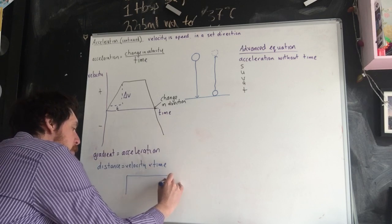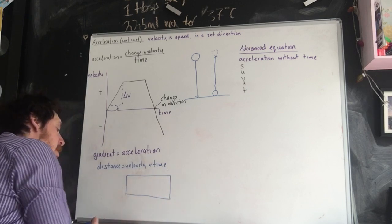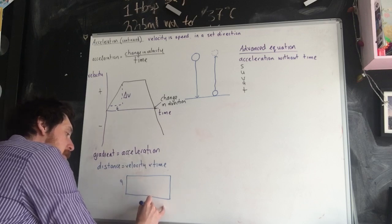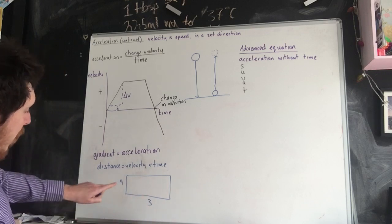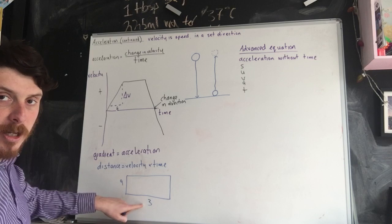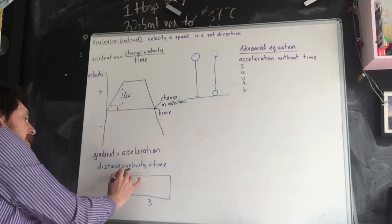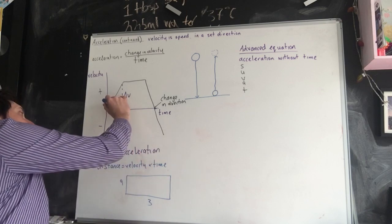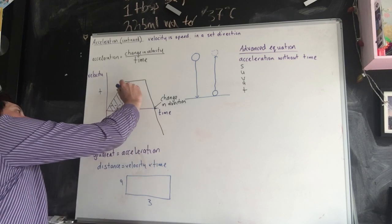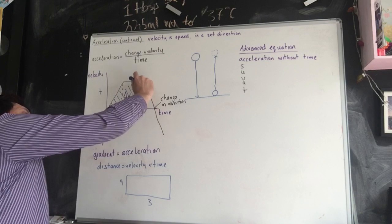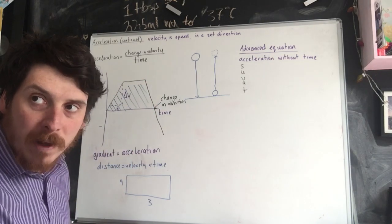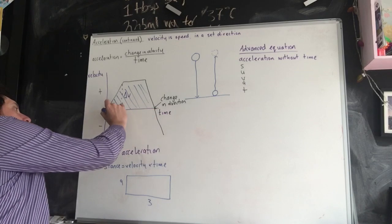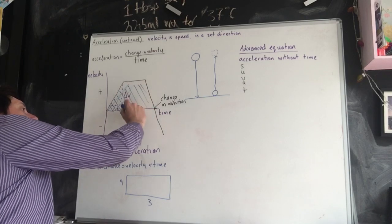So if we have got the area of a rectangle and we wanted to calculate that, then we multiply 9 by 3 in this example. So by the same concept, if we've got velocity on the y-axis and time on the x-axis, it would be the area of this trapezium that would tell us how far the distance has changed for that object.